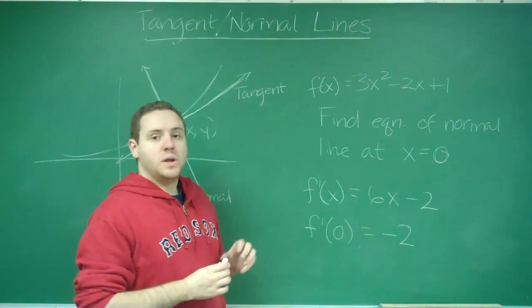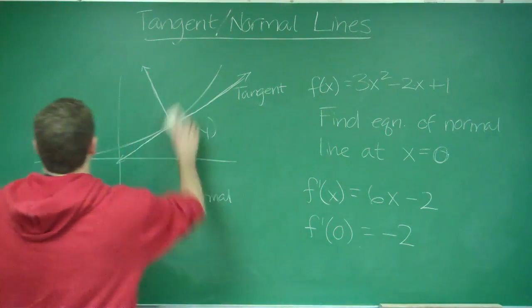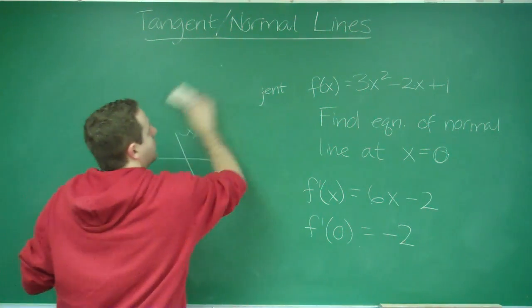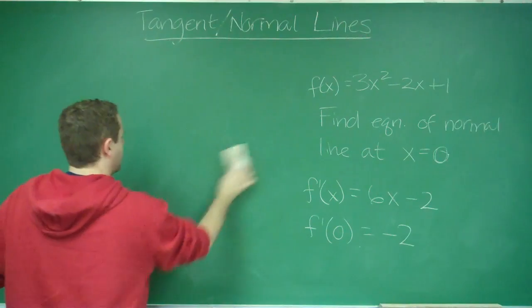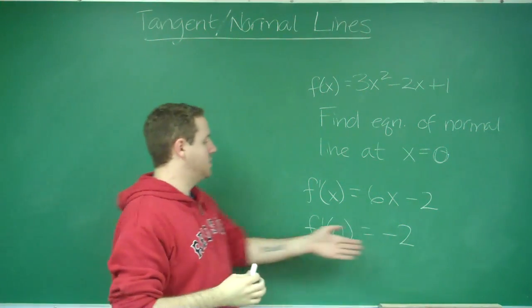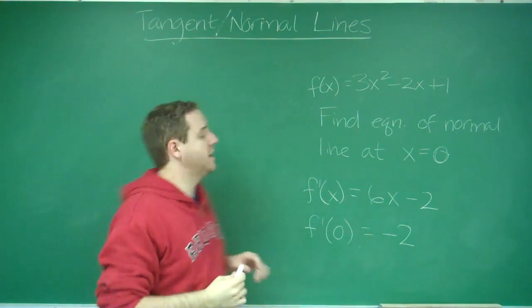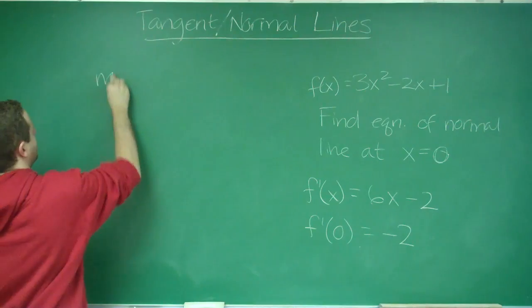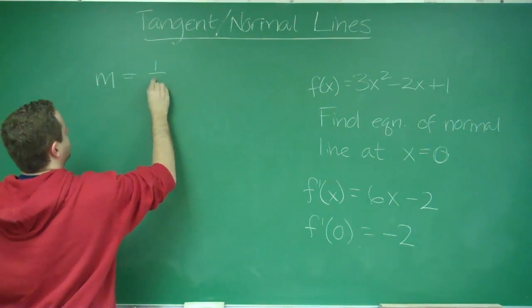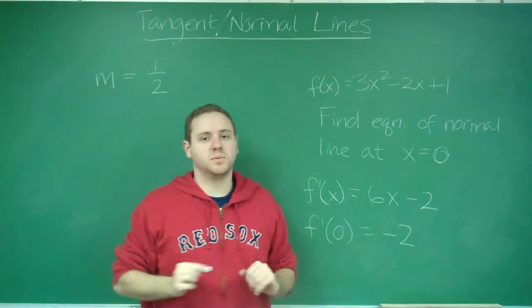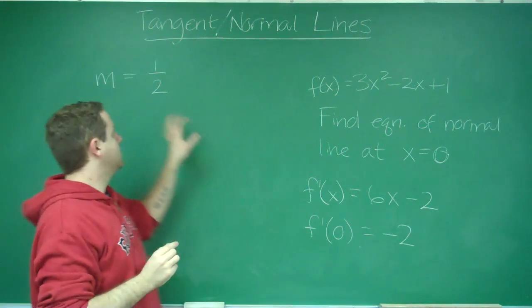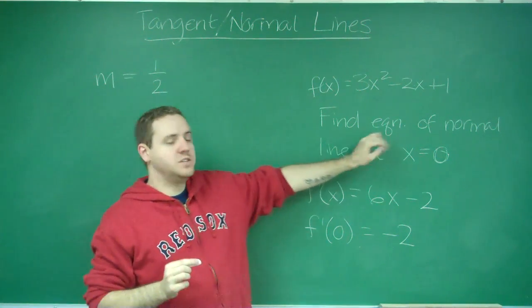We're trying to find the equation of the normal line, so we need the slope of the normal line. The slope of the normal line is just going to be the inverse reciprocal of that. So our slope is going to be 1/2, because we take the negative reciprocal of -2.